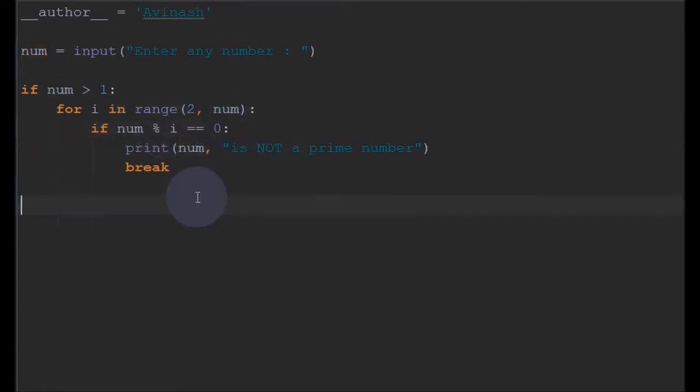parenthesis here. Now we have break in the if loop, so we have to write the else here. In else, we'll simply print 'number is a prime number'. We'll check for some other conditions like